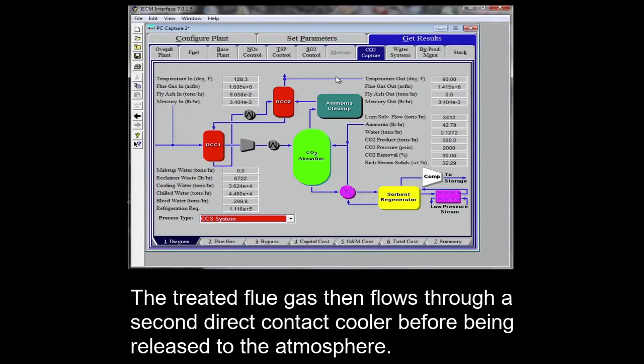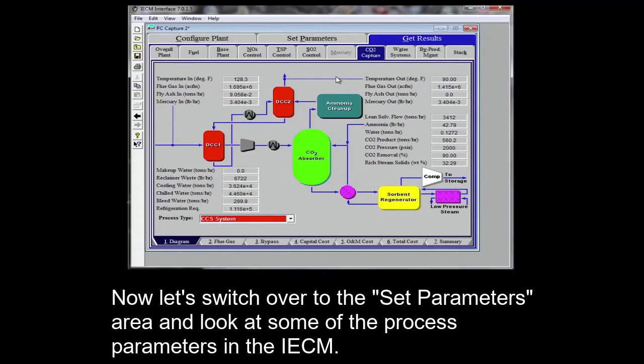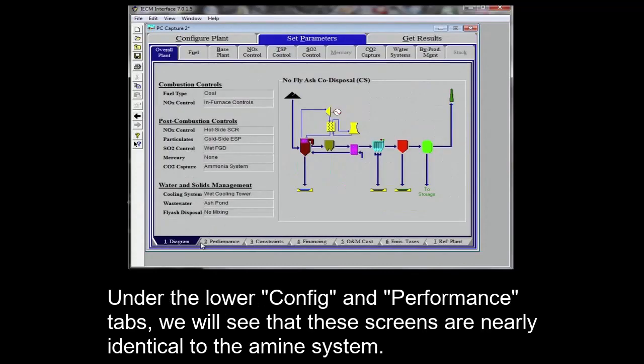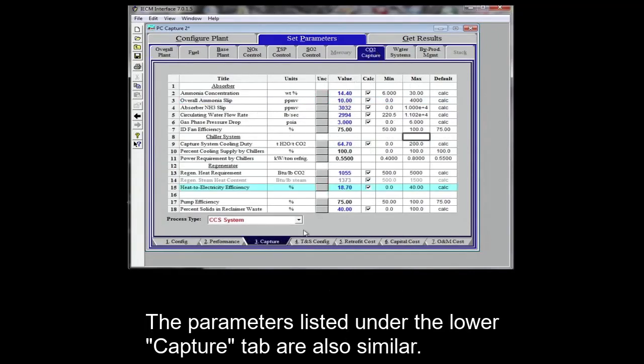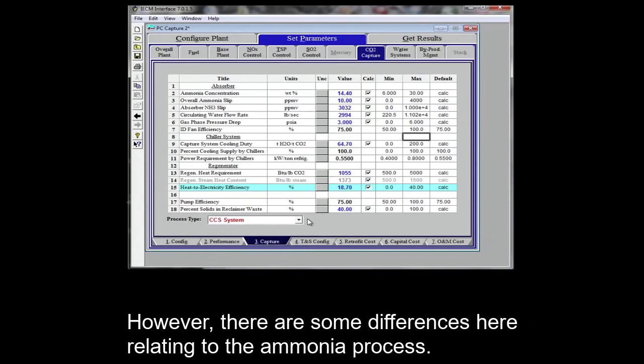The treated flue gas then flows through a second direct contact cooler before being released to the atmosphere. Now let's switch over to the set parameters area and look at some of the process parameters in the IECM. Under the lower config and performance tabs, we will see that these screens are nearly identical to the amine system. The parameters listed under the lower capture tab are also similar. However, there are some differences here relating to the ammonia process.